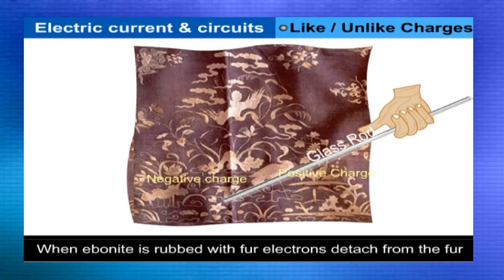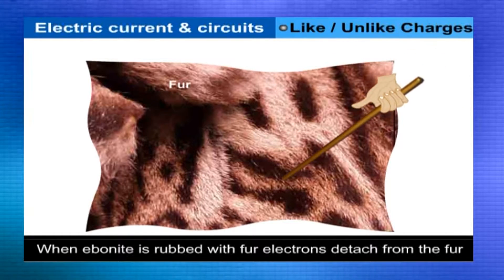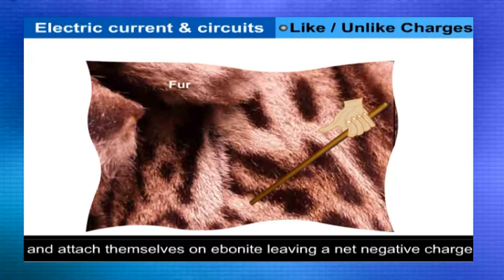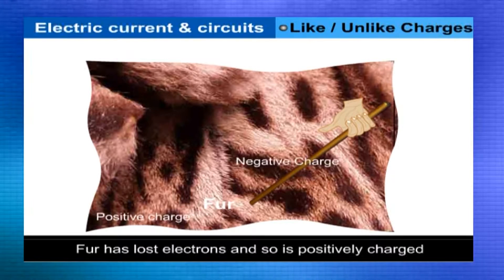When ebonite is rubbed with fur, electrons detach themselves from fur and attach themselves on ebonite, leaving the ebonite with a net negative charge. Fur has lost some electrons and so it is positively charged.